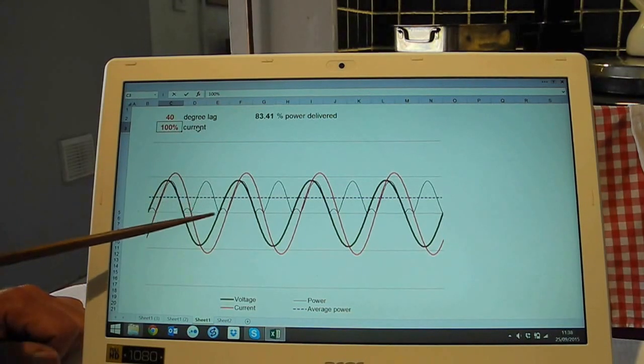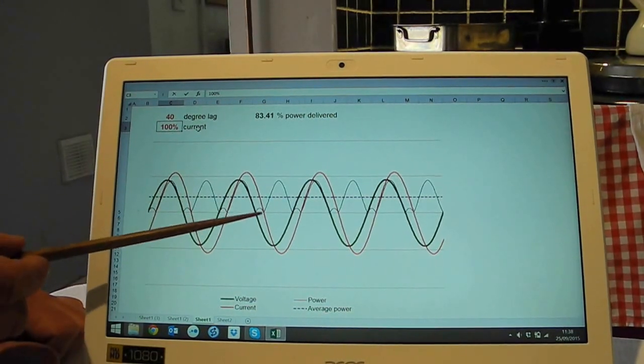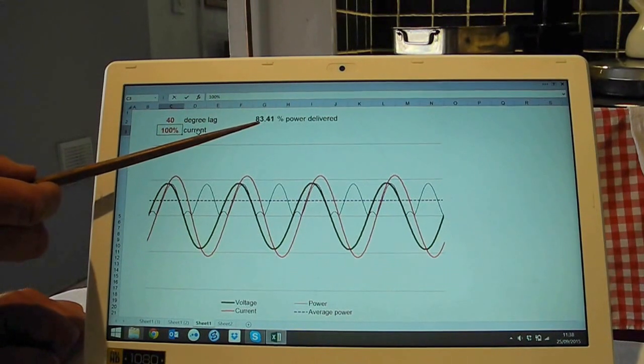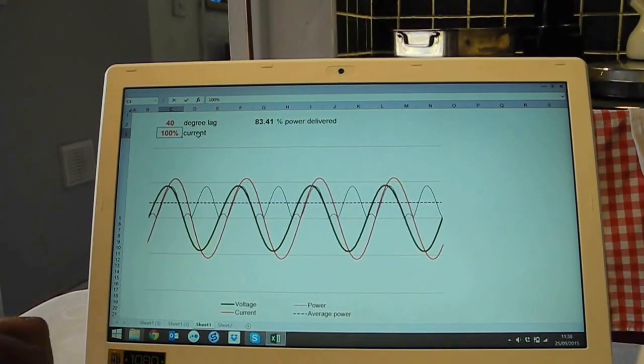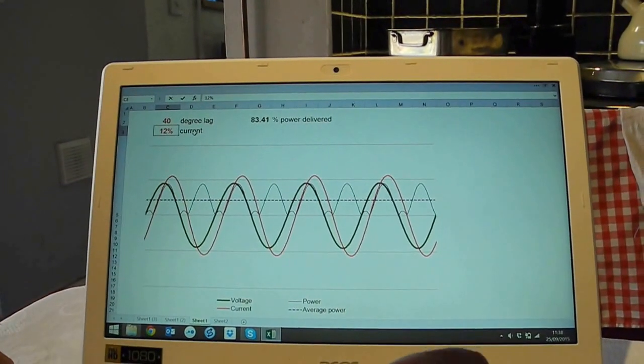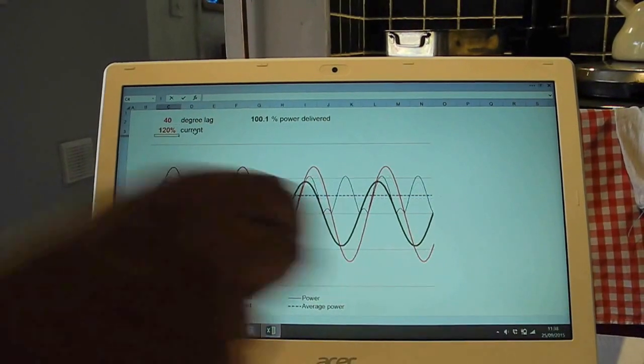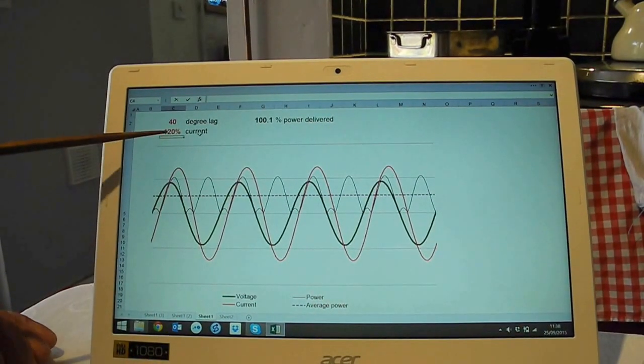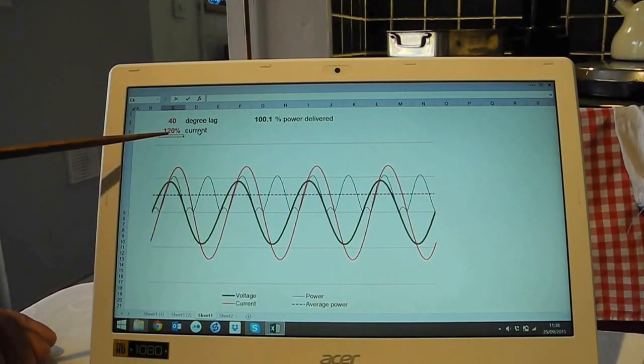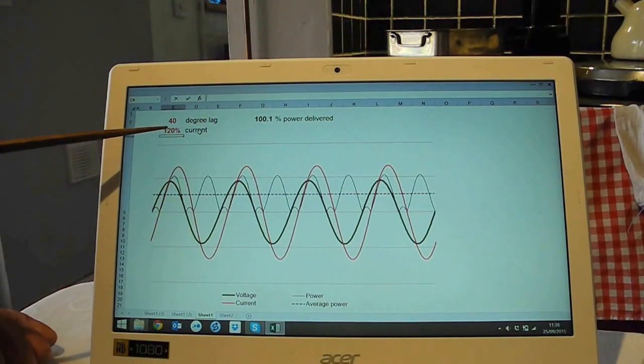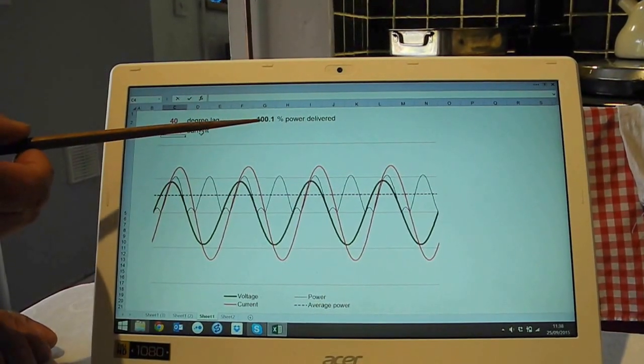The power waveform is here. The average power has now dropped to about 83%, and to restore the power output, which is the thing that I'm interested in after all, I find I have to increase the current by 20% in order to deliver the required amount of power.